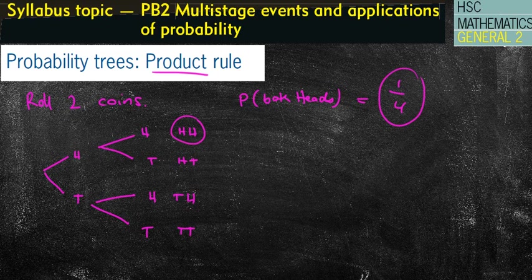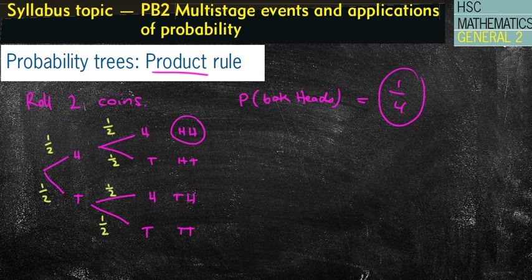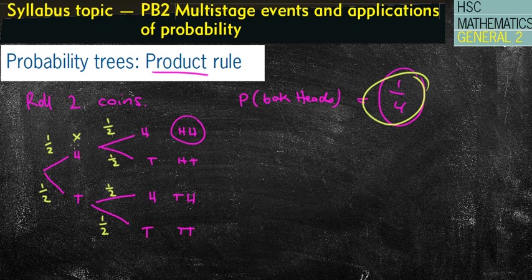What the probability tree does differently is that often the probabilities will not be even chance. In this case they are, so it works out nicely — we have a half chance for all of these probabilities. Because it's even chance, we don't strictly need to write probabilities on there, but I'm going to show you how we get one quarter directly from the tree. The product rule says that as you go along the branch, we multiply the probabilities. So for two heads, we do one half times one half, which is one quarter — the same answer as before.